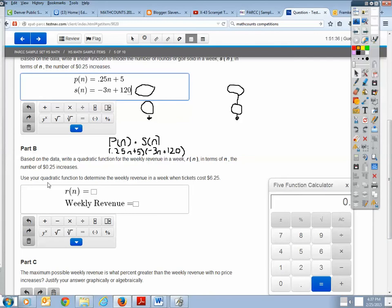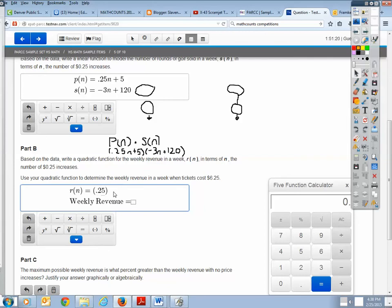So let's scroll down so I can put that in there. So it says based on the data write a quadratic function in terms of N. Okay, I'm in N. So here we go. So we have, in parentheses, 0.25N. And I don't have to multiply it out. I don't have to have it in expanded form because it didn't ask for it. So there's my function of the cost based on the increases. Then I have the function for the number of rounds that I sell.